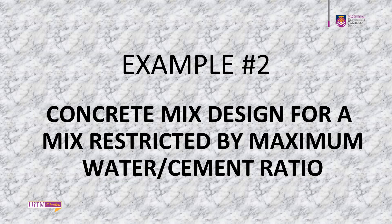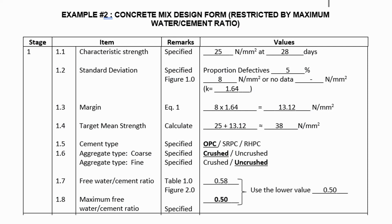Now let's look at example number 2: concrete mix design for a mix restricted by maximum water to cement ratio. This example uses the same problem and all parameters as example 1. The difference is that the maximum free water to cement ratio is given as 0.5, meaning the design mix has a restricted maximum free water to cement ratio. We must choose the lowest value between the W/C ratio from figure 2.0 and the given maximum, so a value of 0.5 is taken.